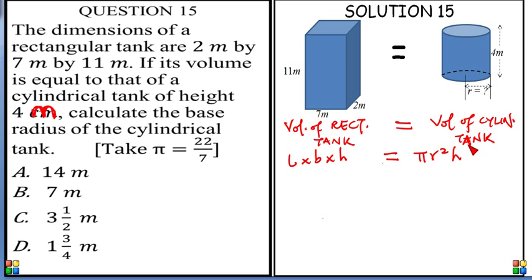Now the length is 7 by 2 by 11 while the pi has been given to us in this place as 22 over 7. So I put 22 over 7 multiplied by, radius is yet to be known, we don't know the radius, so I still put r. And the height is 4 meters.